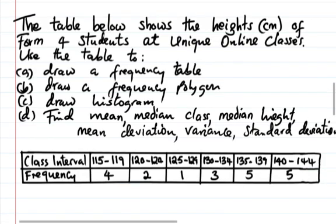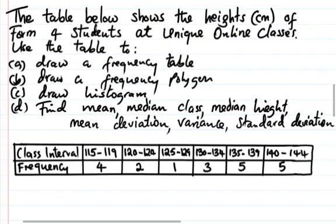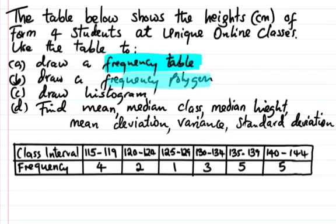In this video it's about grouped data and we'll be in a position to find mean, median, mode, to draw a frequency table, to draw a frequency polygon, and to draw a histogram. So without wasting much of our time, let's go to this question. The table below shows the heights of students at unique online classes. We should use the table to draw a frequency table, to draw a frequency polygon and histogram, and to find mean, median class, median height, mean deviation, variance, and standard deviation.